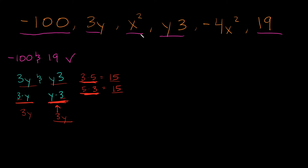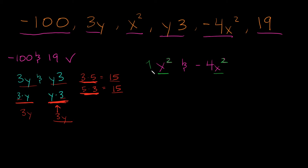And lastly from this set we have x squared and negative 4x squared. They have the same variable and, more importantly, the same exponent — both have a 2. The first term has no written coefficient, so there's an implied 1. But again, coefficients don't matter. Even with a 1 and a negative 4, those are just coefficients — whether different or opposite in sign, it doesn't matter. So these are like terms.